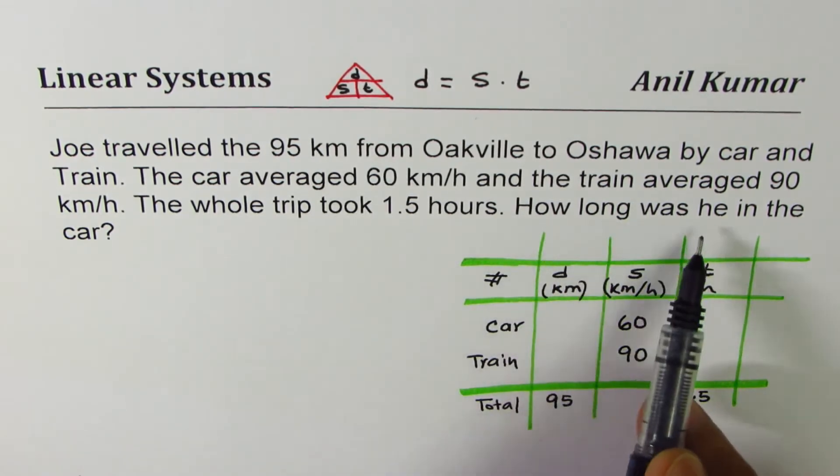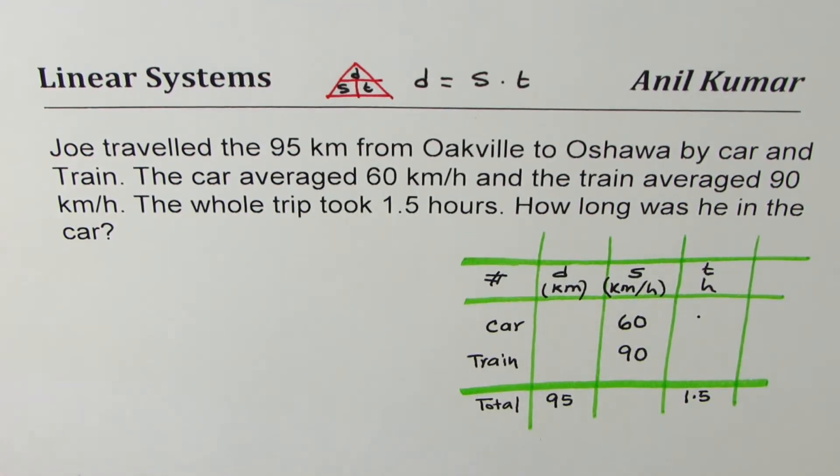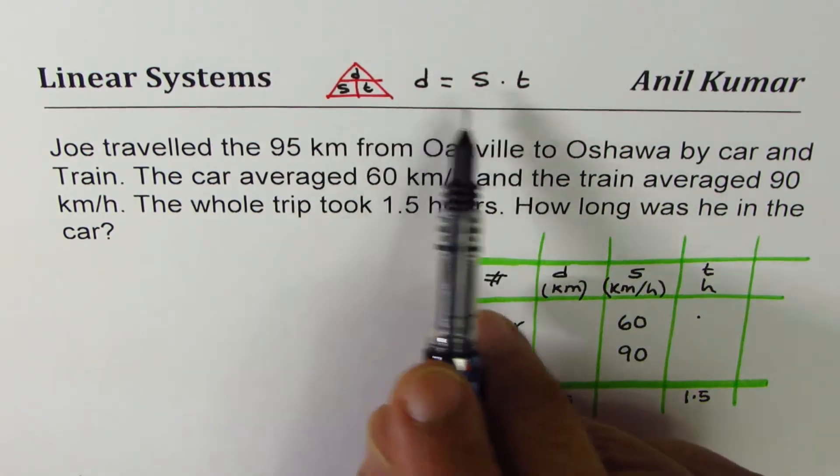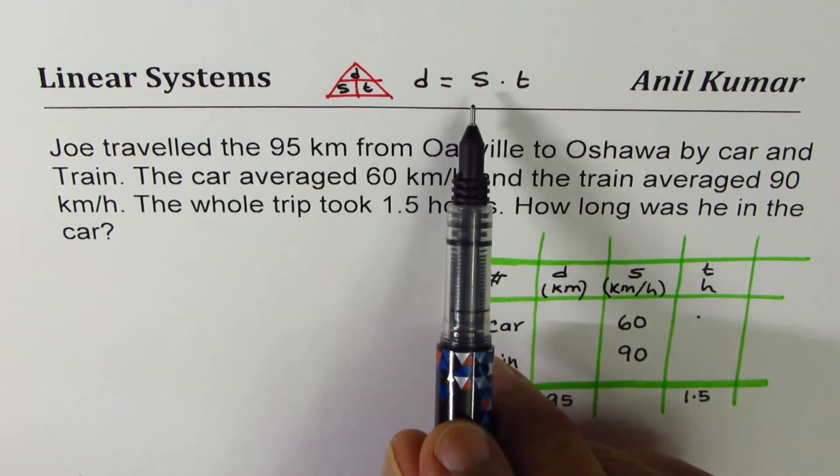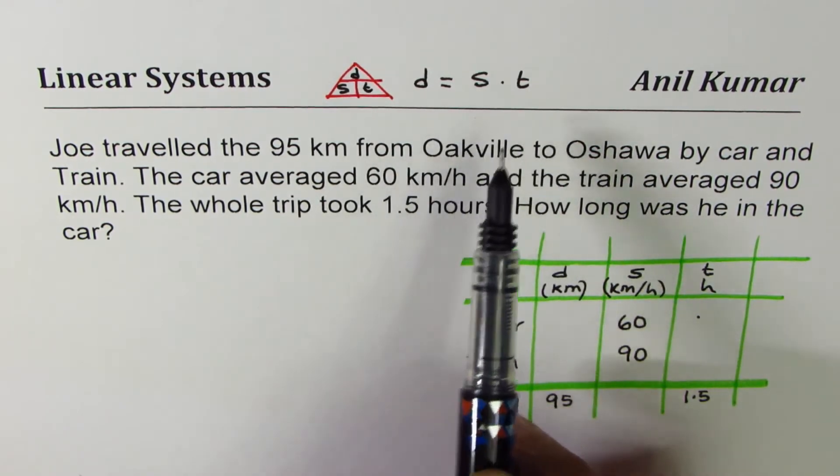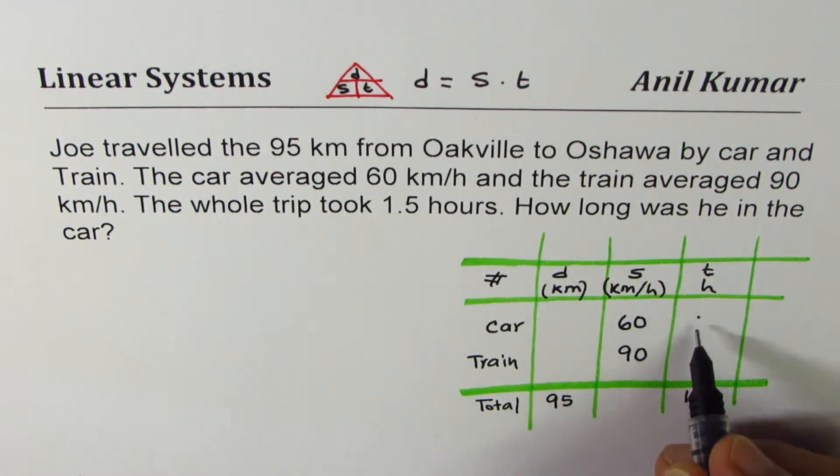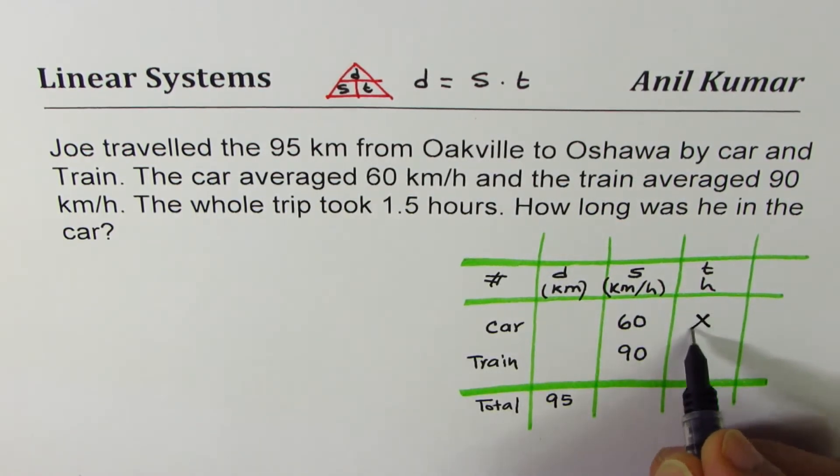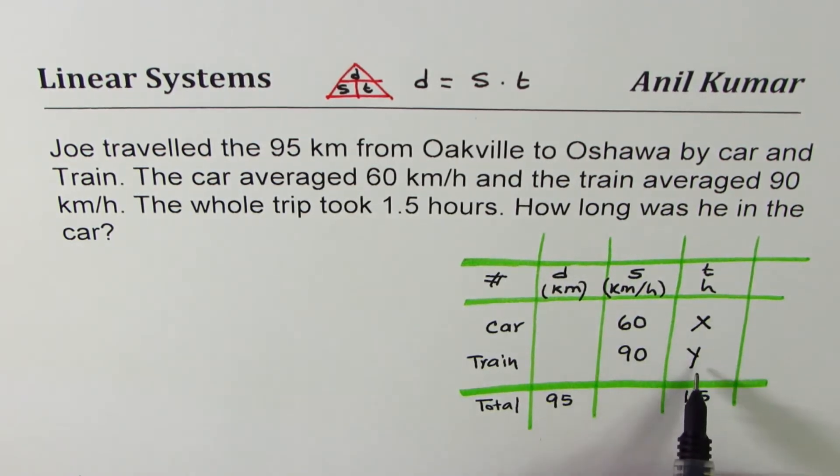How long was he in the car? So you have to find the time when Joe was in the car. Now in distance, speed, time formula, you'll see distance is product of speed and time. So it's good practice to always take time as one of the unknown variable. So let this be x. So let it be x hours in car and y hours in train.